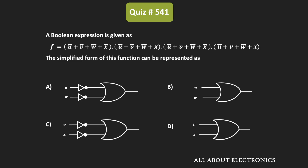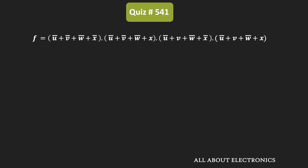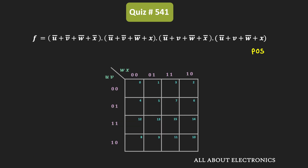Welcome to the YouTube channel all about electronics. In this question, we've been given a boolean function and asked to find its simplified form. This function F is given to us in the POS form, that is the product of sums form. We can simplify this function by using the K-map.